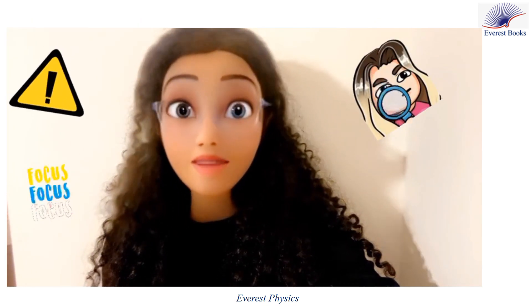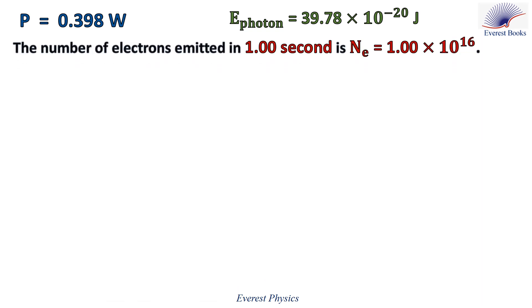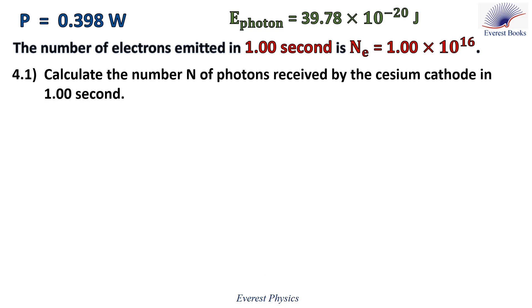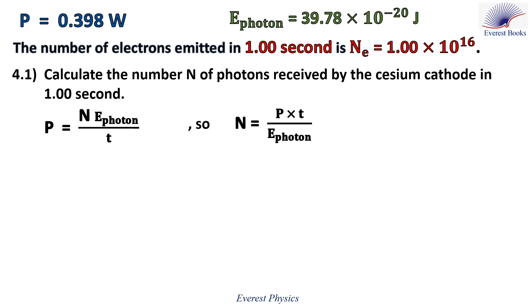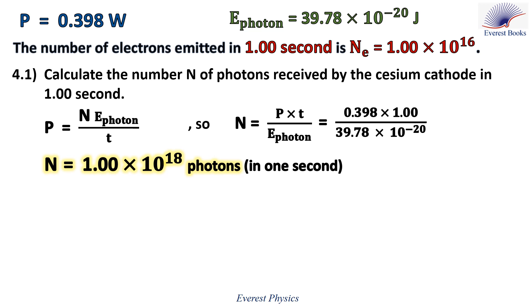Focus — this is important. Given that the power of the incident radiation equals 0.398 watts and the number of electrons emitted per second is 1 times 10 to the power 16, calculate the number N of photons received by the cesium cathode in one second. The power equals N times the energy of each photon over time. Rearranging and substituting values gives N equals 1 times 10 to the power 18 photons.